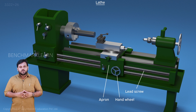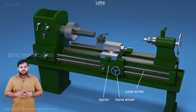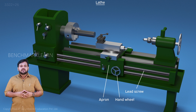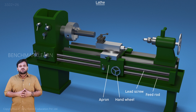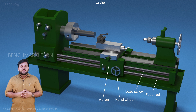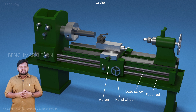The lead screw is a long threaded shaft used only when a thread cutting operation is to be done. The feed rod is used for automated movement of the carriage on the guideways.